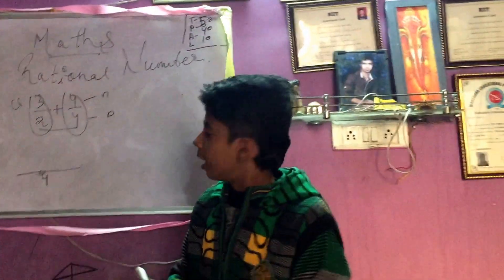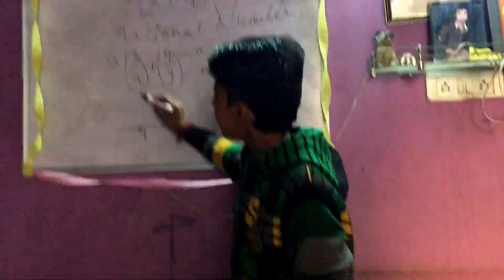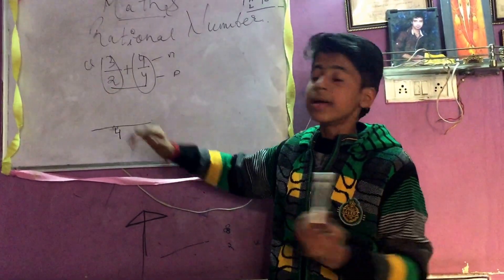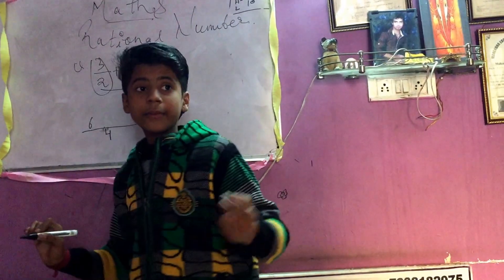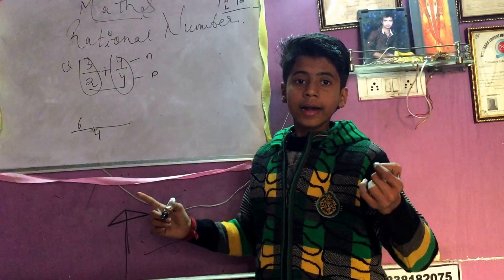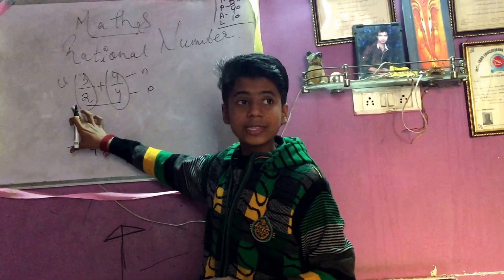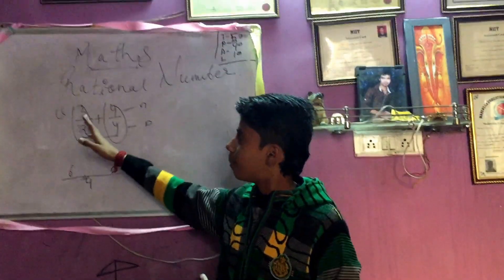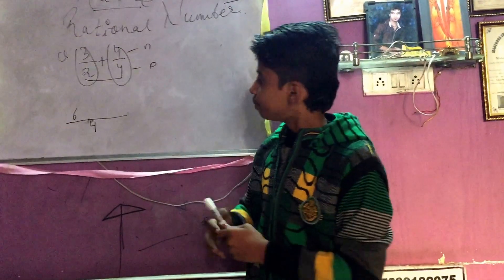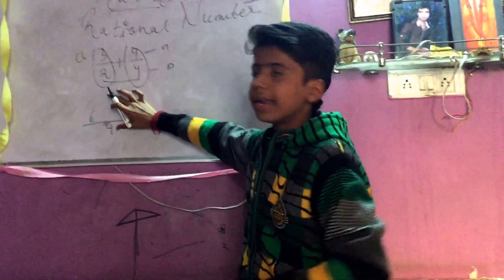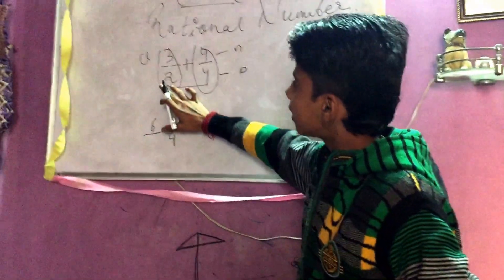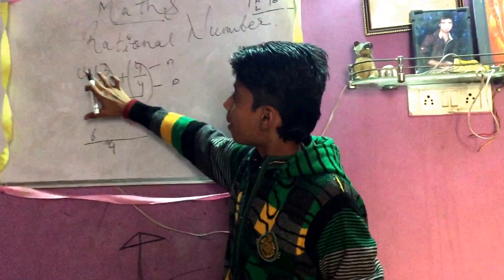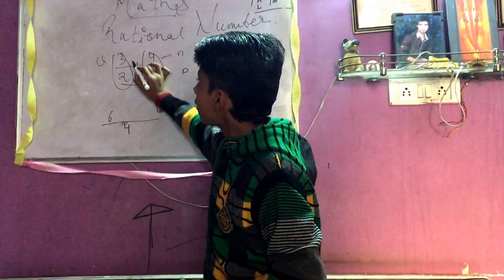If you divide four by two, the digit will be two. Then multiply two by three — the digit will become six. To summarize: first you divide the LCM by the denominator, then multiply the result by the numerator. So four divided by two is two, and two multiplied by three is six.